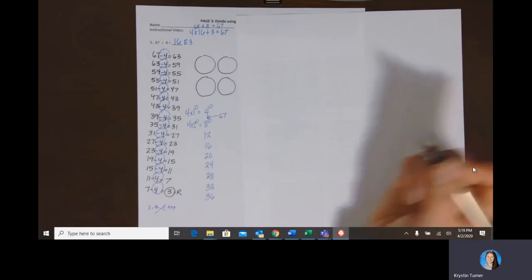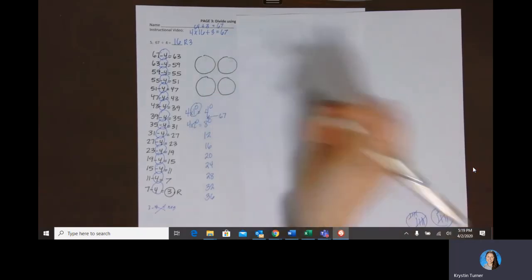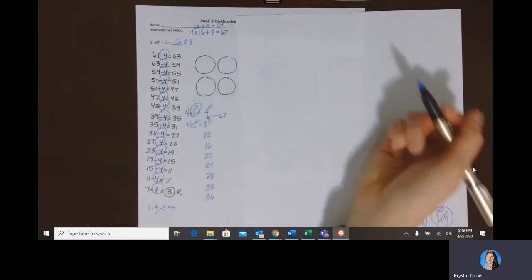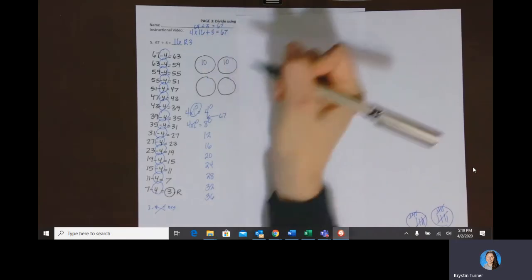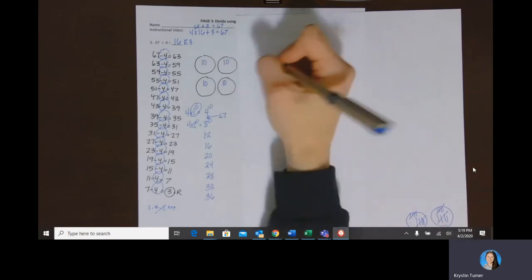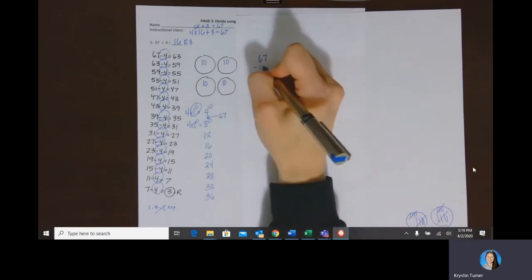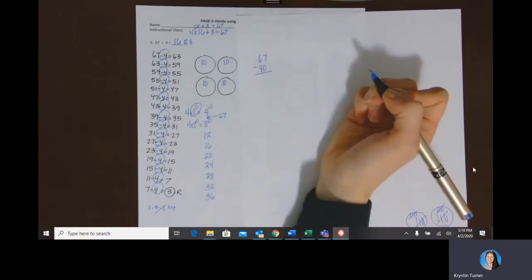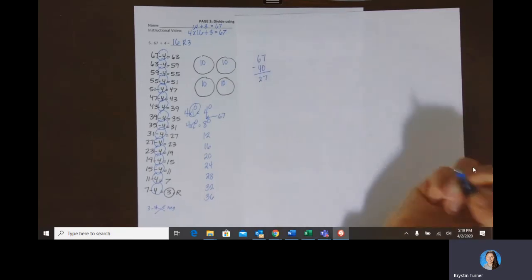So what I can do is I can start off by putting 10 into each group. So I think 10, 20, 30, 40. So I have 67, I've used up 40, and now what I have left over is 27.